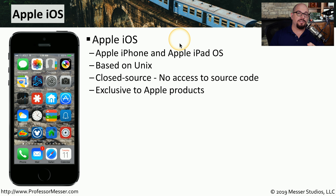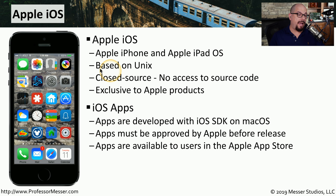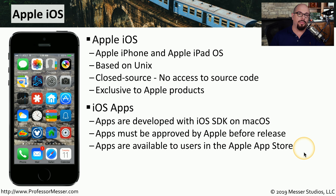Apple phones use their own operating system called iOS, available on the Apple iPhone and the Apple iPad. It's based on Unix and is a closed source operating system - you don't have access to any of the source code, and you'll only find iOS on Apple products. You cannot buy hardware from a third party and run iOS on it. If you're a software developer wanting to create apps for an Apple device, you'll use Mac OS and the iOS Software Developers Kit. To make software available to end users, you submit it to Apple for approval, and once approved, it's added to the Apple App Store.